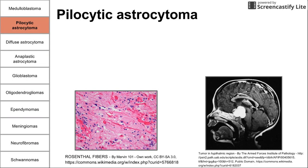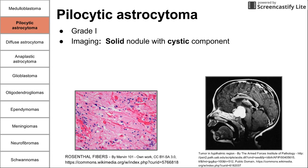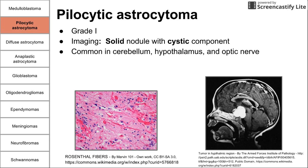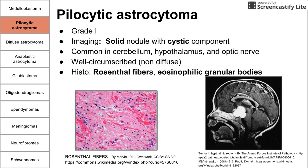Next is pilocytic astrocytoma. Like medulloblastoma, it is common in children. This is a grade one, relatively benign tumor. On imaging, you see a solid nodule with a cystic component — an important differentiating feature. If you see a solid tumor-like nodule with a watery sac next to it, a cystic component, it could be pilocytic astrocytoma. This is also common in the cerebellum, as well as the hypothalamus and optic nerve. It is non-diffuse and well-circumscribed. On histology, you see Rosenthal fibers and eosinophilic granular bodies. A key molecular feature is the BRAF mutation associated with pilocytic astrocytoma. This is the first of four astrocytomas, and they get continuously higher in grade as we go down the list.